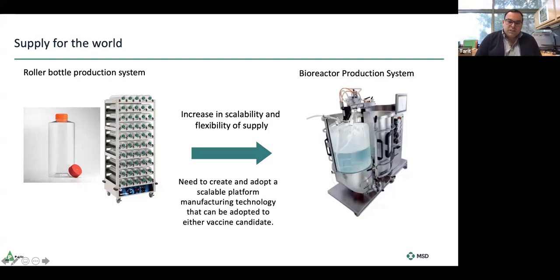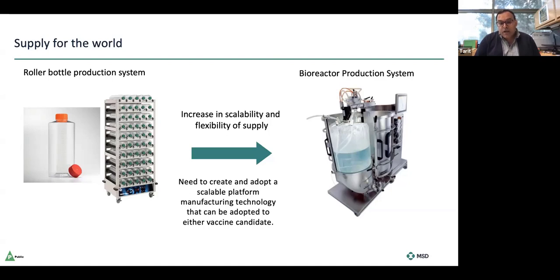For our SARS-CoV-2 process, because we do have the roller bottle experience, we are generating phase one material in roller bottles since phase one requires a relatively small amount. But leveraging that platform technology and knowing its limitations, we're advancing that process as quickly as possible into phase one clinical trials while simultaneously developing a second-generation process in a bioreactor system that is far more scalable and should be able to meet commercial and global supply demands.